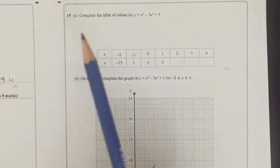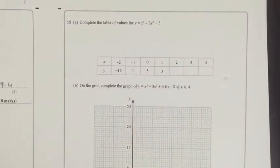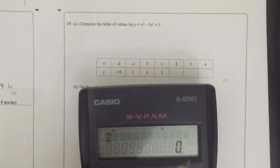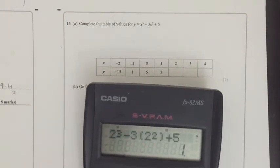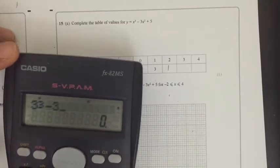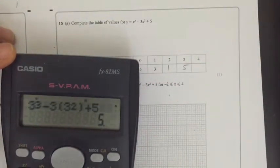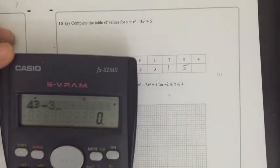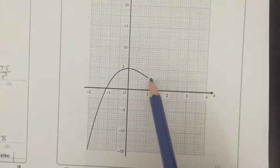Okay, so complete the table of values for Y equals X cubed minus 3X plus 5. All you have to do is substitute in the values for X. So 2 cubed minus 3 times 2 squared plus 5 is equal to 1. And then the same, 3 cubed minus 3 times 3 squared plus 5 is equal to 5. So 4 cubed minus 3 times 4 squared plus 5 is equal to 21. And then for the next question, all you have to do is plot these points. As you can see, the first value of 1 is plotted for us.